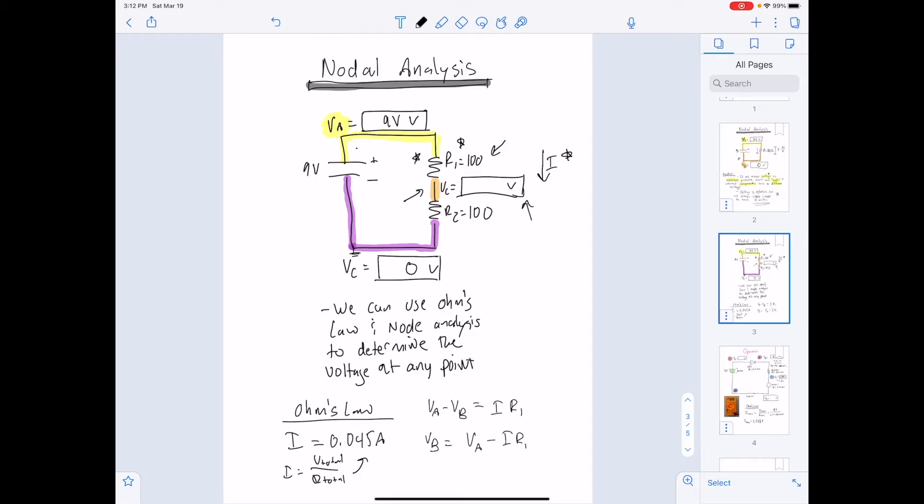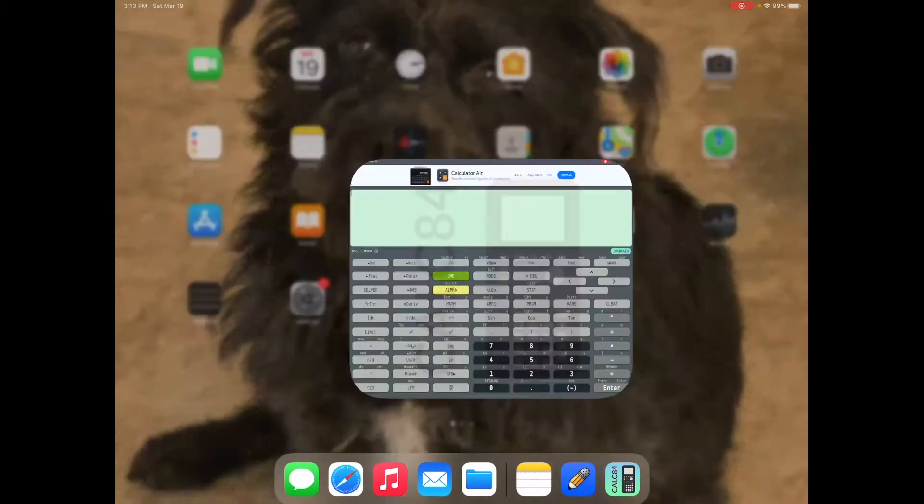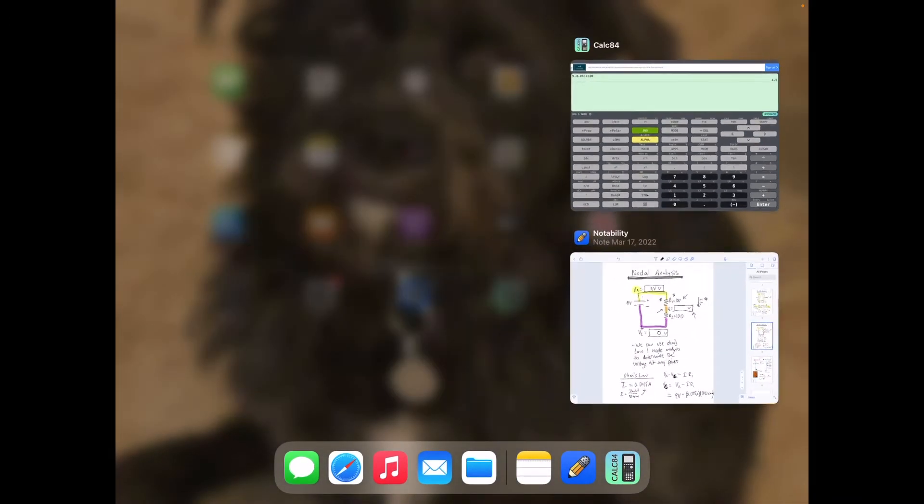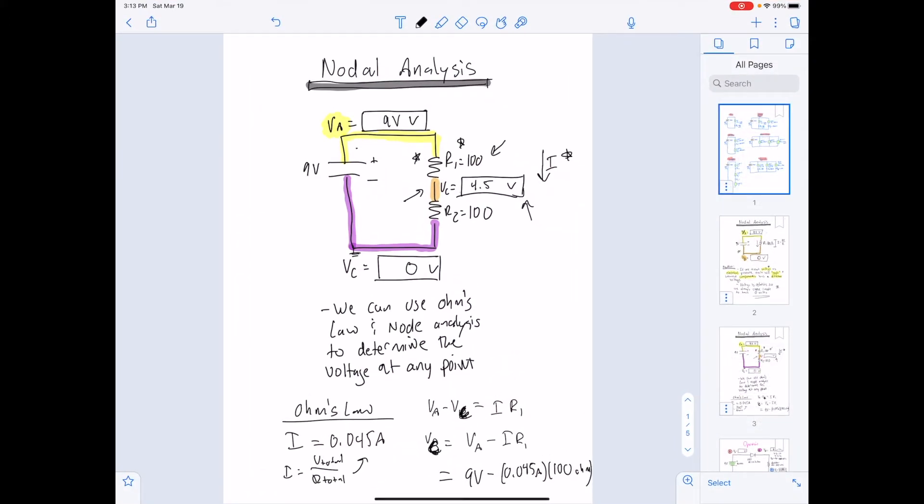So if we do that, we say voltage A minus voltage C is going to be equal to the current that goes through R1 times R1. That gives us voltage C equals the voltage at A minus the current times resistance. And we get nine volts minus 0.045 amps times resistance 100 Ohms. Nine minus 0.045 times 100, and we get 4.5 volts. So that tells us that right here, we have 4.5 volts of electrical pressure.